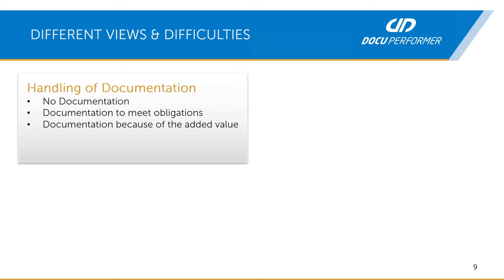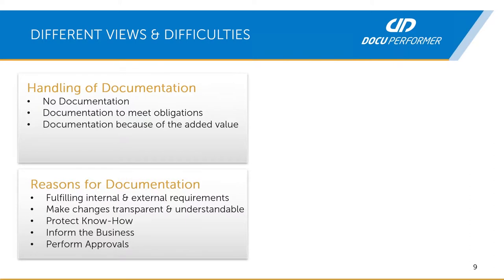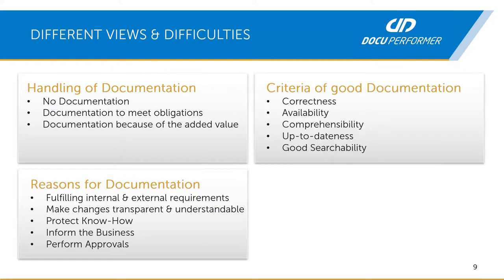We've noticed three types of companies: those that don't document at all, those that document due to internal or legal obligations, and those that document because they recognize the benefits. Reasons to document include fulfilling internal or external requirements, making changes transparent and understandable, protecting employee know-how, informing the business about key figure definitions, and recording the state of implementation for approvals.